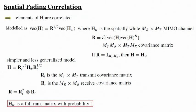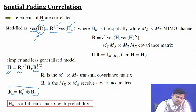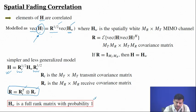We also discussed spatial fading correlation, where if H is a correlated channel it is modeled via the vectorization of H: vec(H) = R^(1/2) * vec(H_W). Given a spatial covariance matrix you can generate correlated channel coefficients from a spatially white channel. A simpler Kronecker model splits correlation between transmitter and receiver, where the full covariance is the Kronecker product of R_T and R_R. We also noted that H_W is full rank with probability 1.